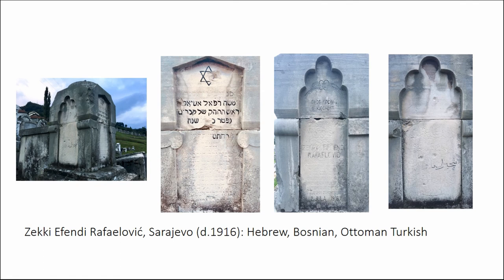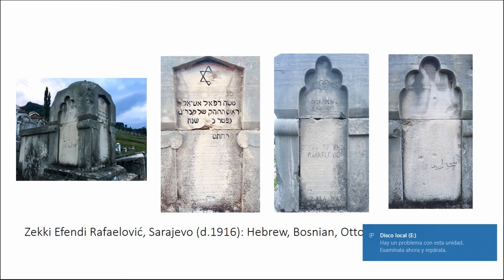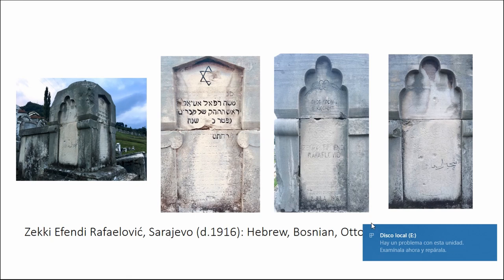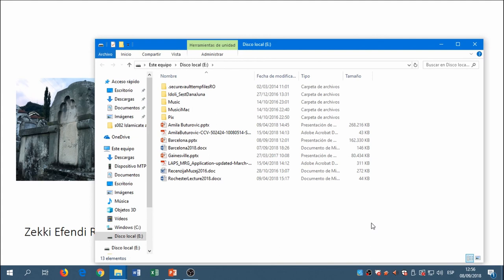This didn't necessarily mean you were not authentically identified with your religious community, but rather that those religious identifications were much more porous than what we assume today. There is an expression in Bosnia from this period — 'do podne Ilija, posle podne Alija' — usually translated as meaning Bosnians who don't really care about religion. But in fact I think it is the opposite: it says that identity is not to be seen as carved in stone. Thank you.